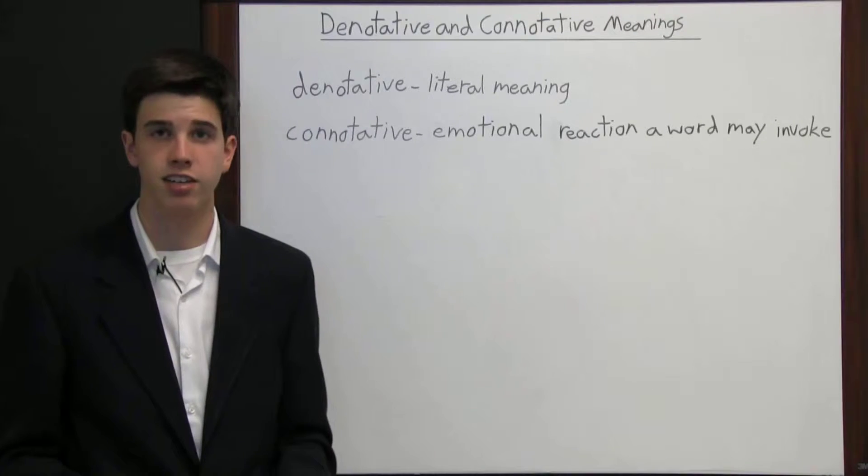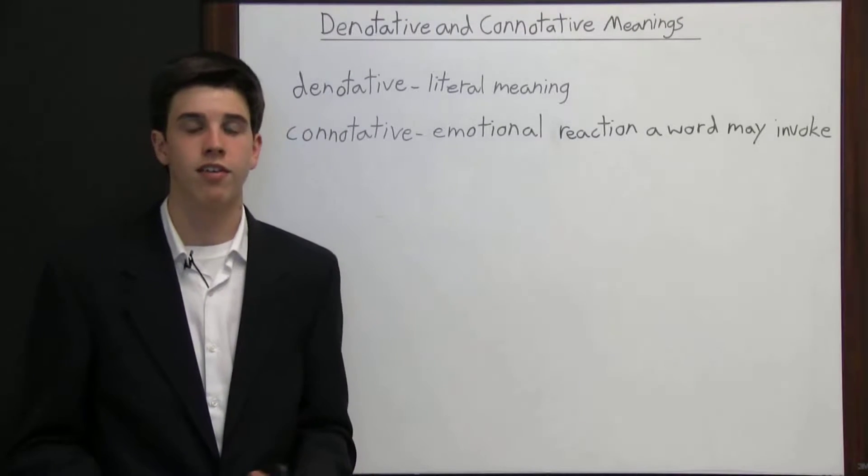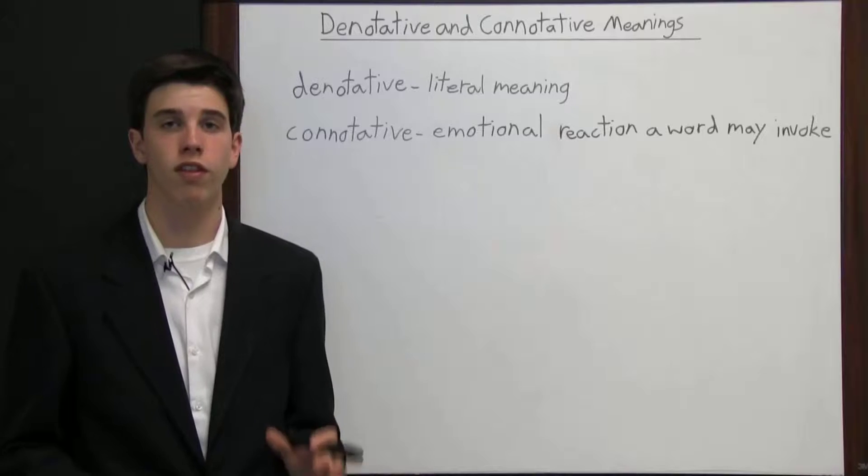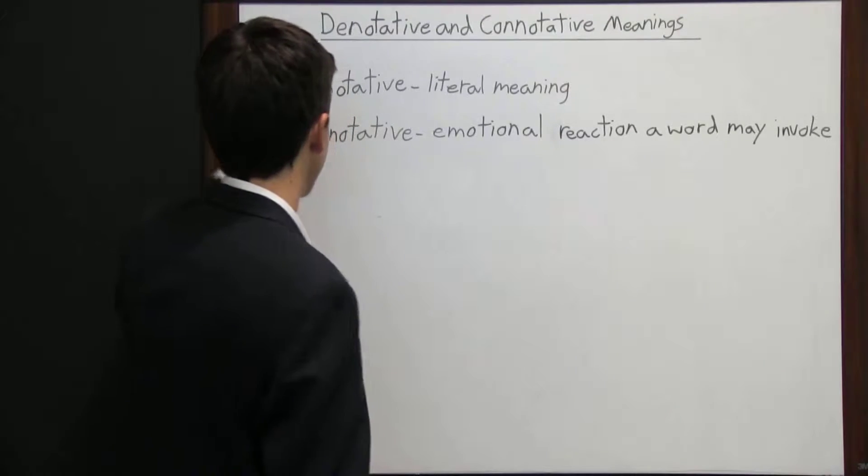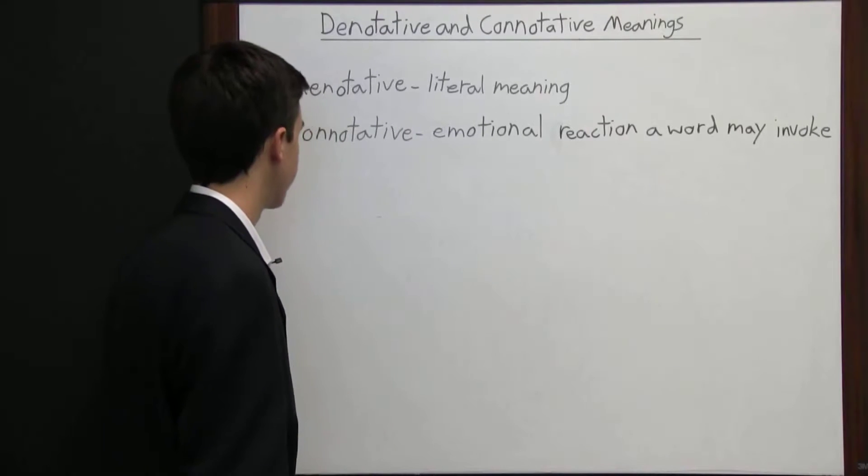When defining words found in a text, often words have a definition that is more than the dictionary definition. We can say that words have two definitions: a denotative meaning and a connotative meaning.